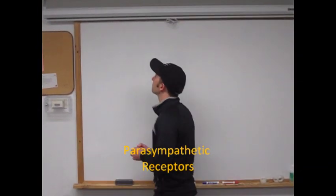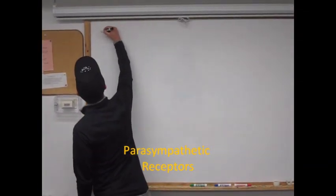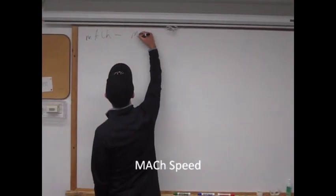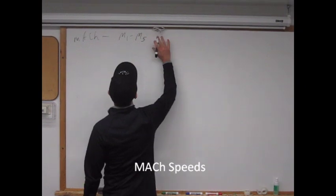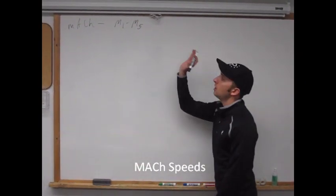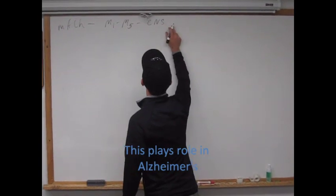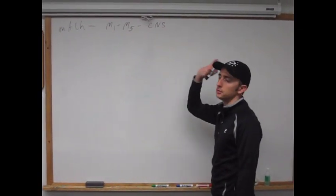Parasympathetic nervous system. It has one main receptor, that is muscarinic acetylcholine receptor, which you can break into M1 through M5. All five receptors have effects on the CNS. I'm really not going to get into the details, but they all have effects on the CNS.